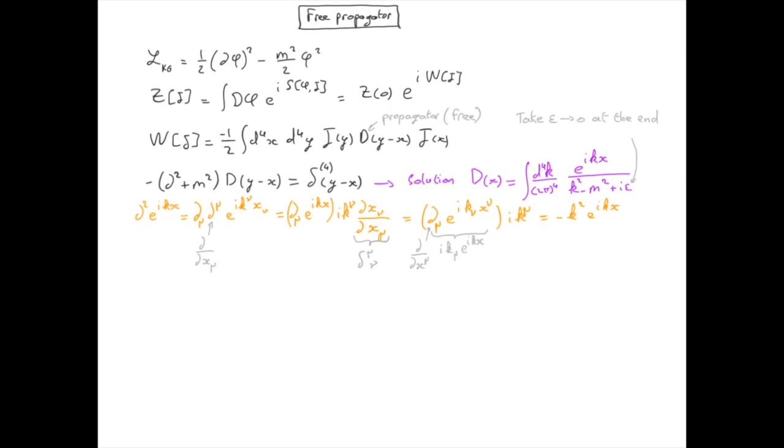So whenever we have a del squared exponential ikx, that brings down a minus k squared in front of the exponential. Whenever we have a del mu with an upper or lower index, that will bring down an ikmu with the same index.